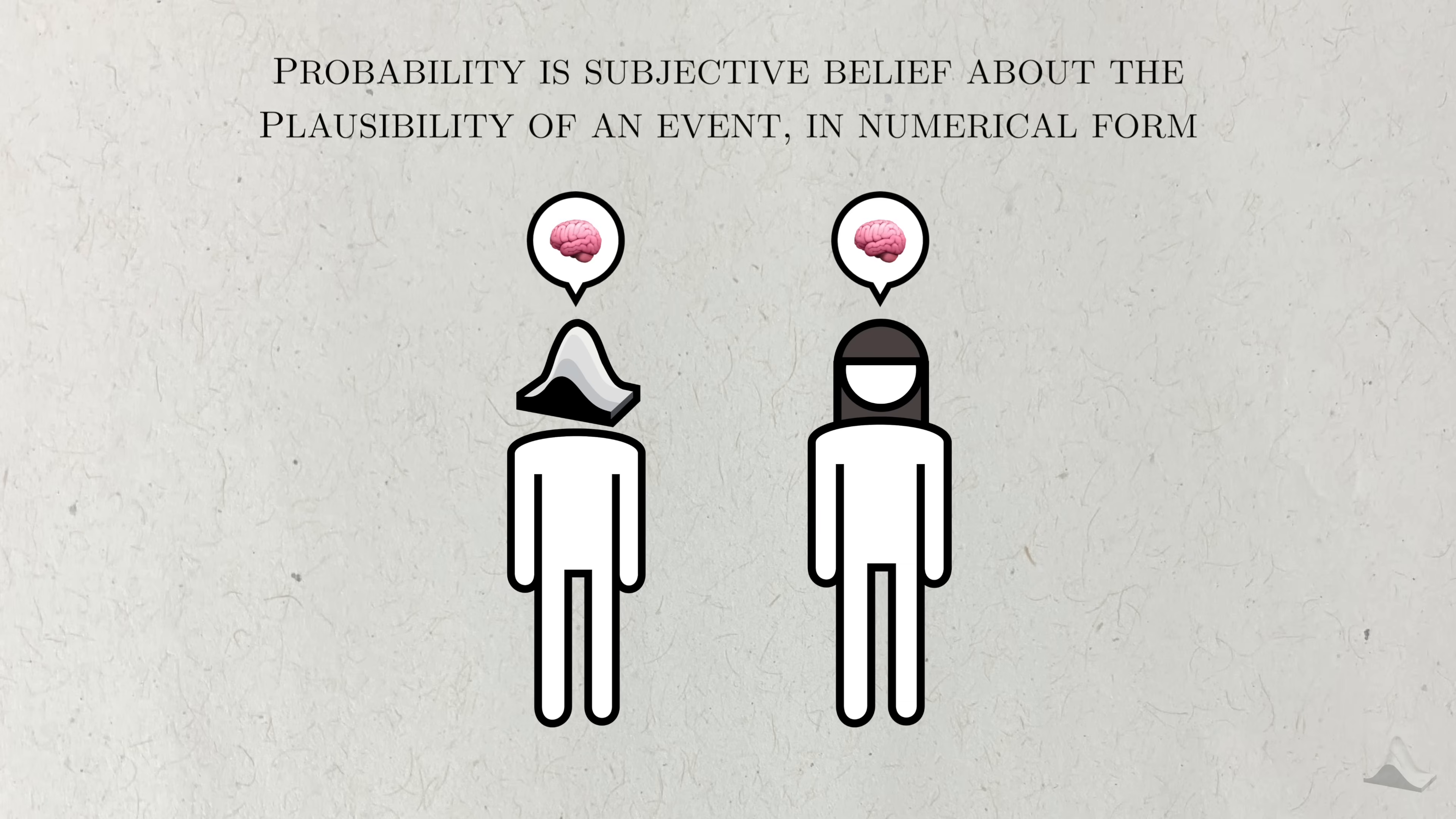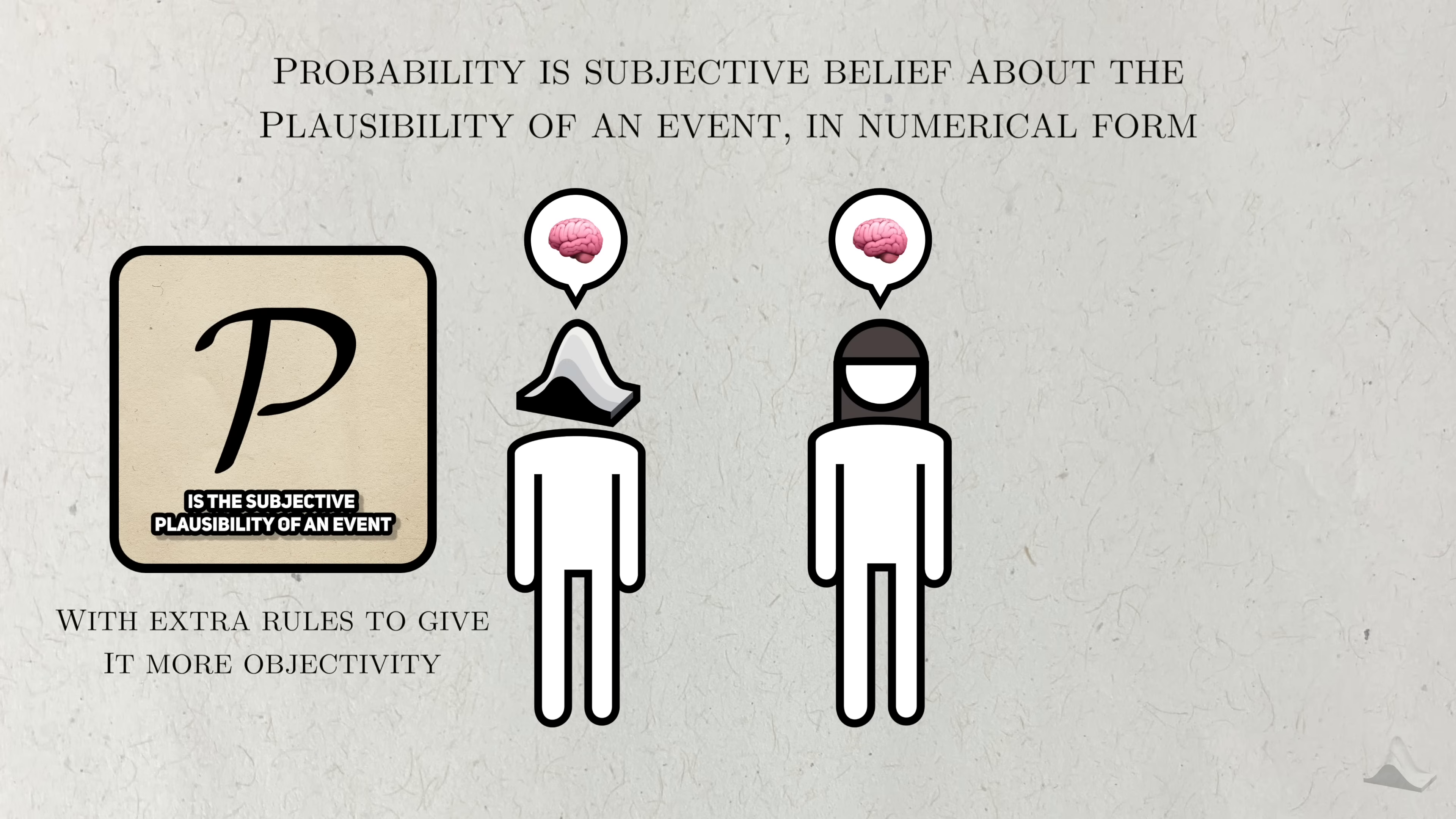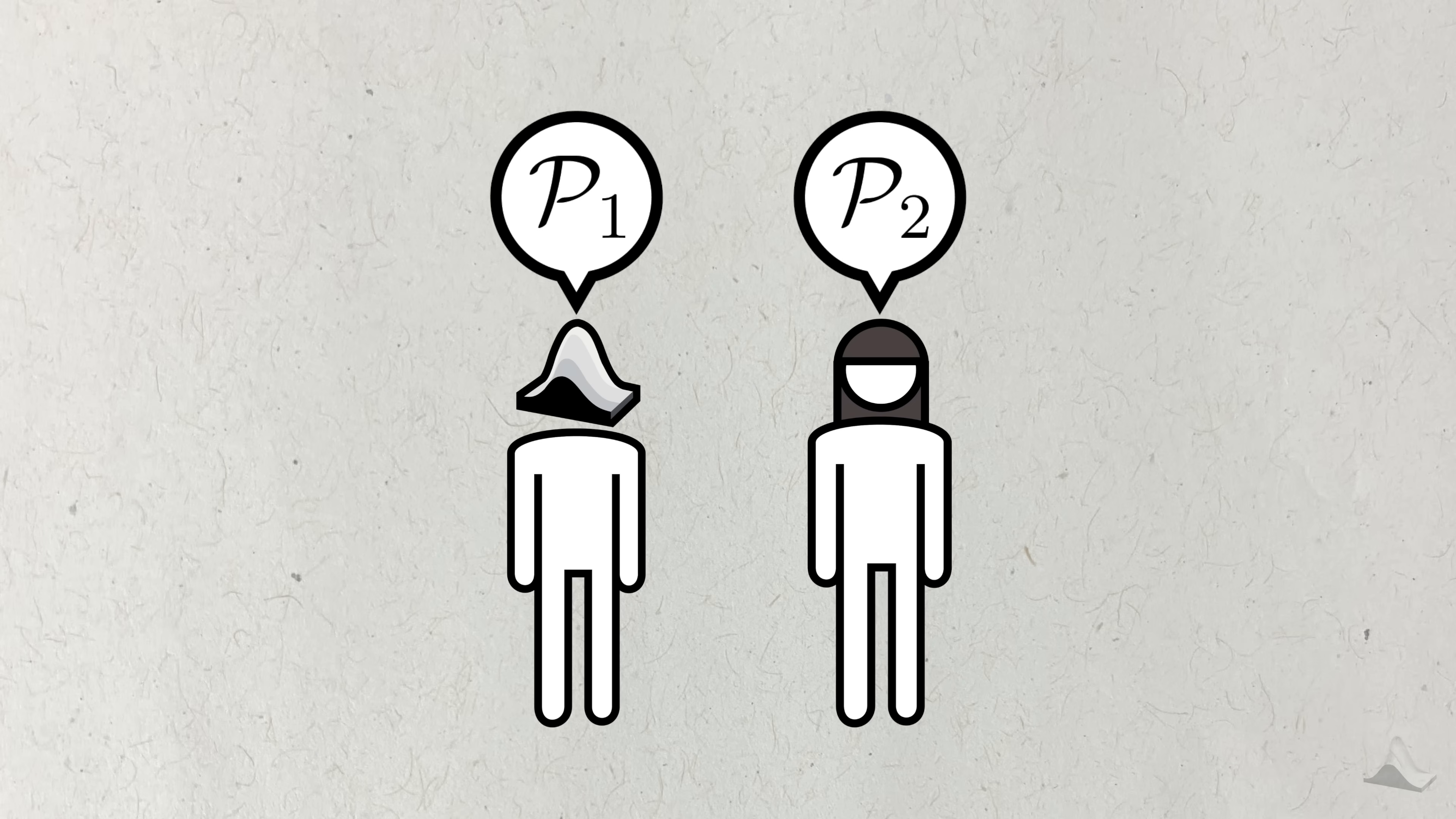To Jaynes, probability is just a subjective belief about the plausibility of an event in numerical form, akin to the Bayesian interpretation, but subjected it to additional constraints that gave it a sense of objectivity. By objective, Jaynes means that two people with the same assumptions about an event should assign the same probability of it happening. Conversely, if two people assign different probabilities to an event, then they must have different prior information.